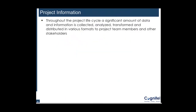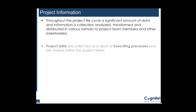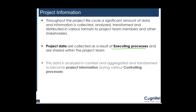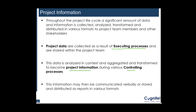Now let's understand what project information is. Throughout the project lifecycle there would be a significant amount of data and information which would be collected, analyzed, transformed, and distributed in various formats to different team members and stakeholders. Project data is collected as a result of execution processes and shared with the project team. This data is analyzed, aggregated, and transformed to become project information during various controlling processes. This information may then be communicated verbally or stored and distributed as various reports.